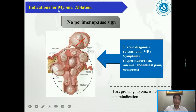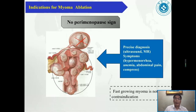What are the indications for myoma ablation? First, precise diagnosis is needed — ultrasound and MRI are the first choices for definitive diagnosis. Second, symptoms: when fibroids cause hypovolemia, anemia, abdominal pain, or compression. Third, the patient should not be perimenopausal, because myoma is a disease that relies on estrogen.